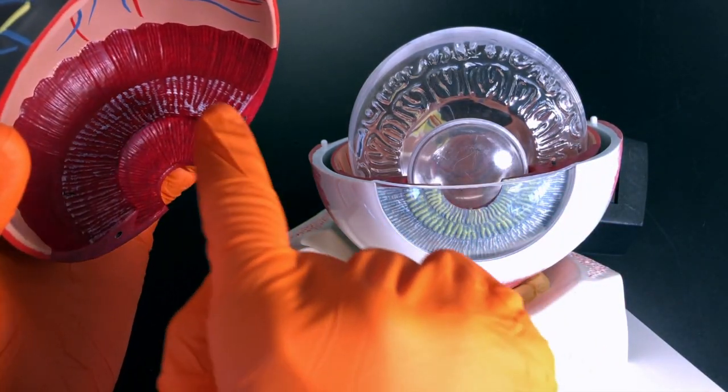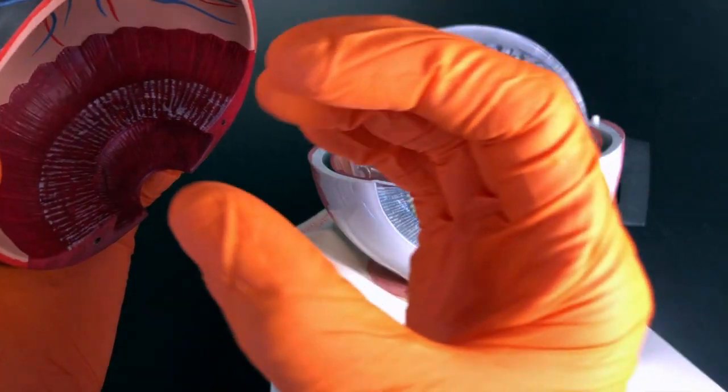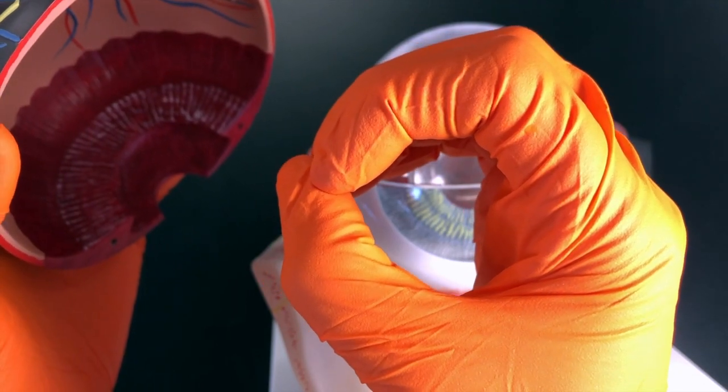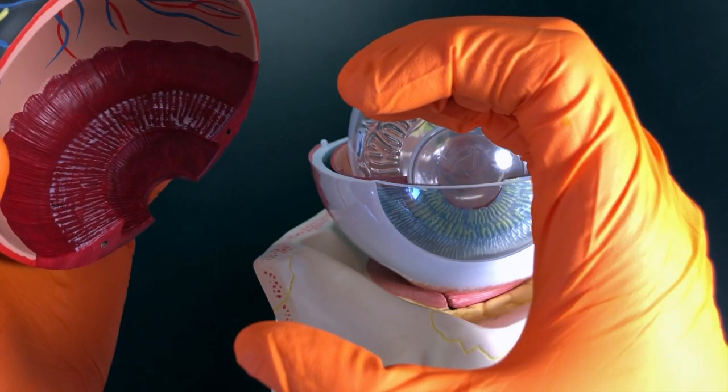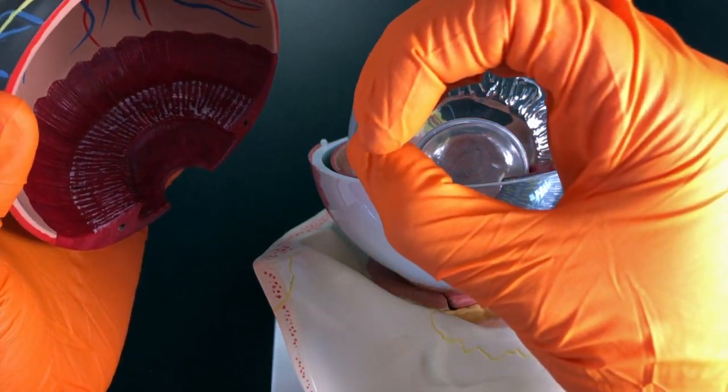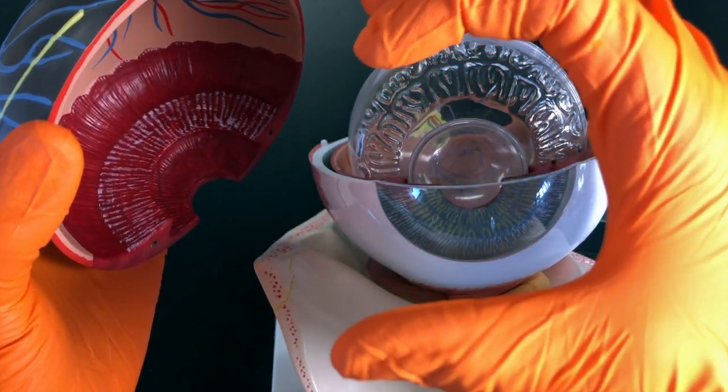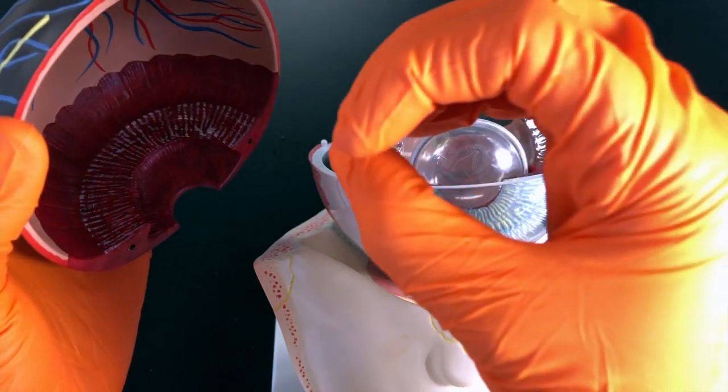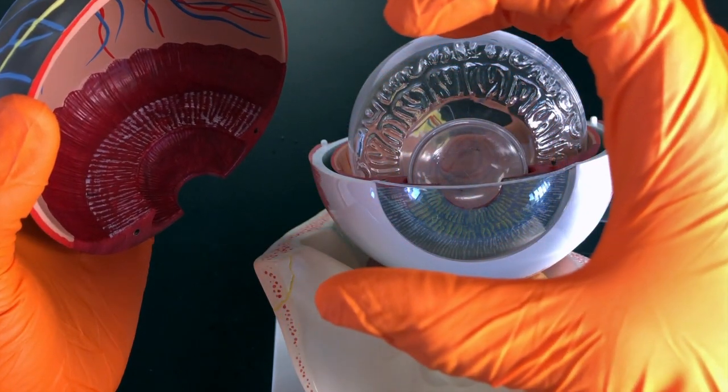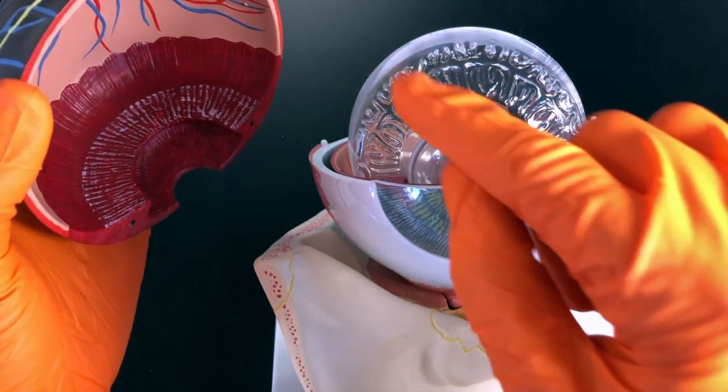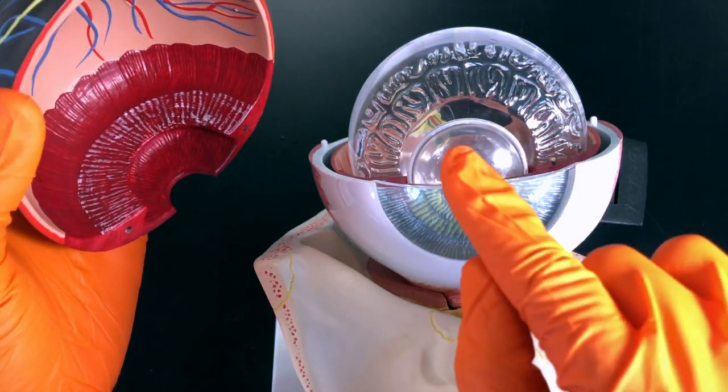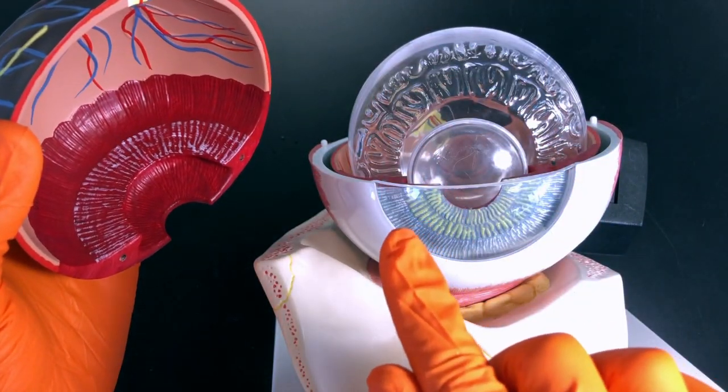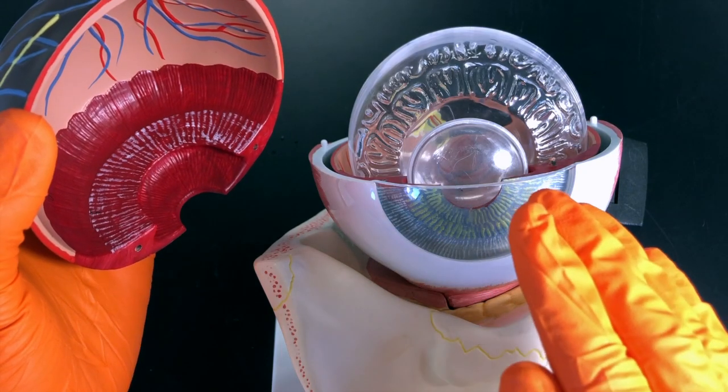This is really important when we're looking at how we focus on images. This is a circular muscle. If a circular muscle relaxes, it will open up. When that muscle opens up, it's pulling on the suspensory ligaments, and that flattens the lens. That's what happens when we are looking at things at a distance.